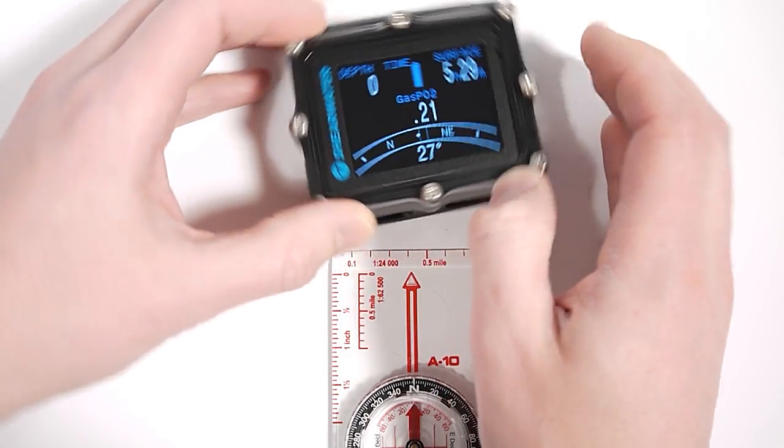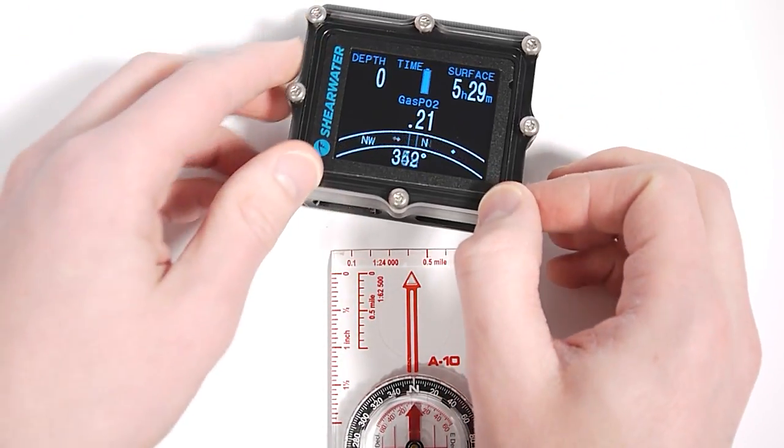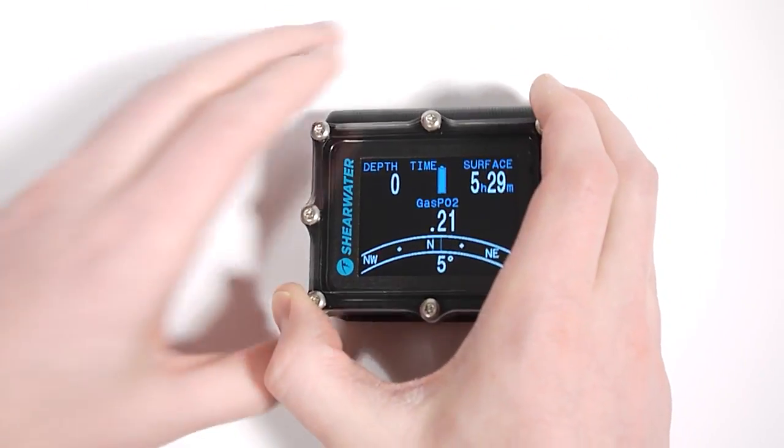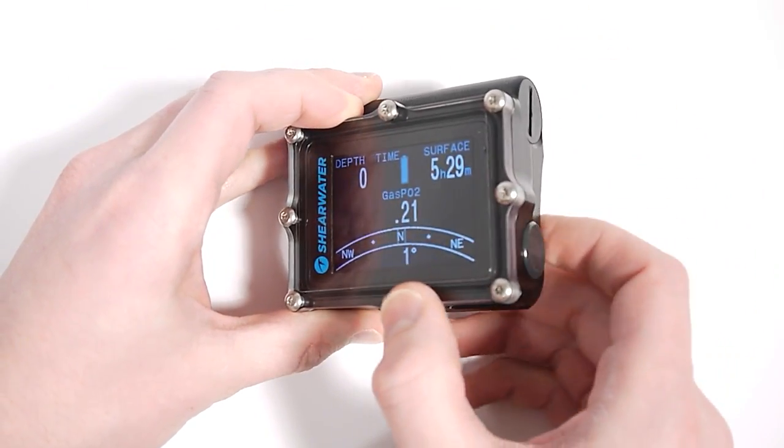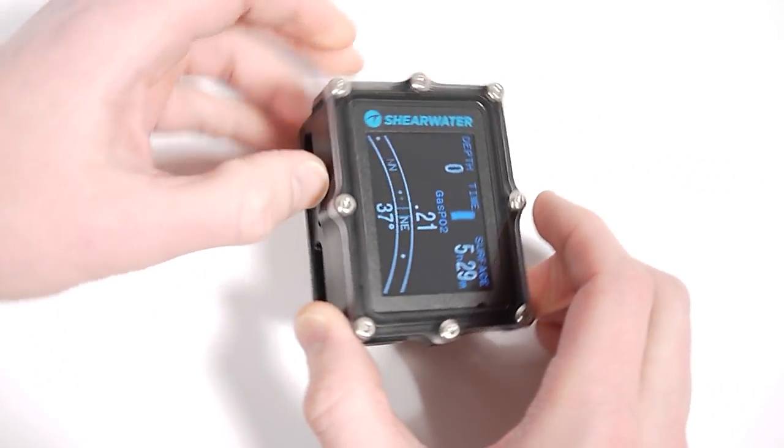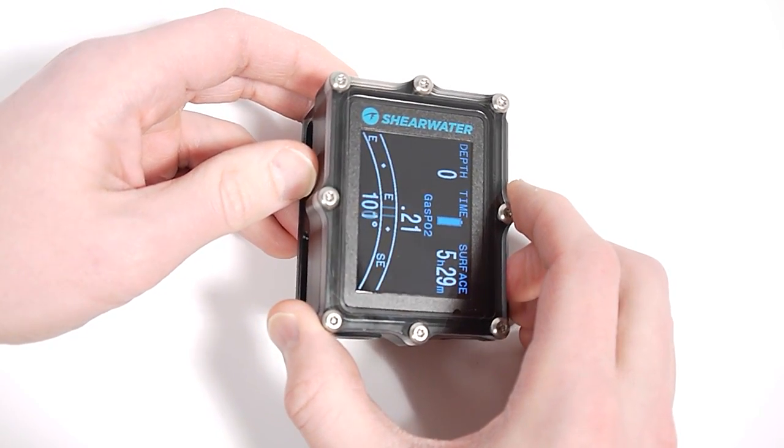The compass moves quickly and fluidly. And one other feature of it is that it is tilt compensated. So if the compass is tilted, it will still behave normally. You can see it can tilt it on either axis here.